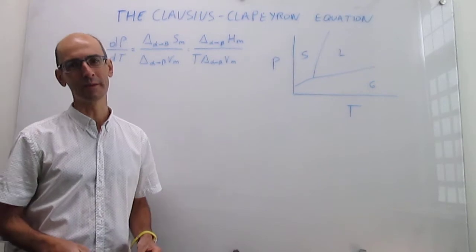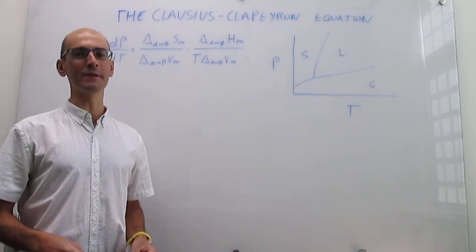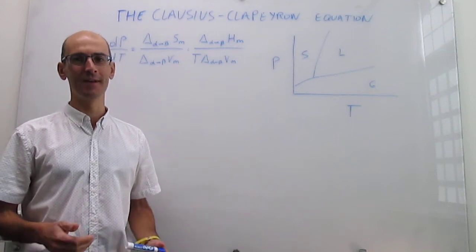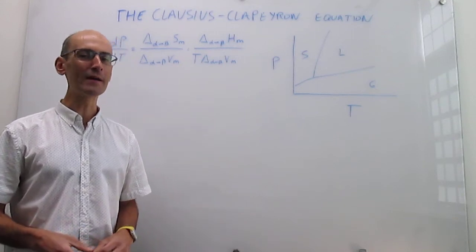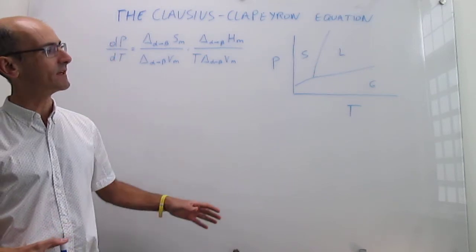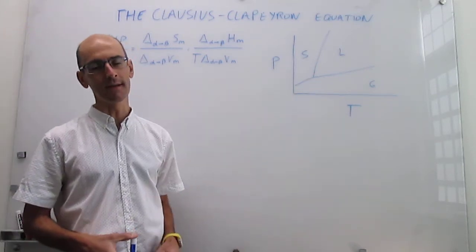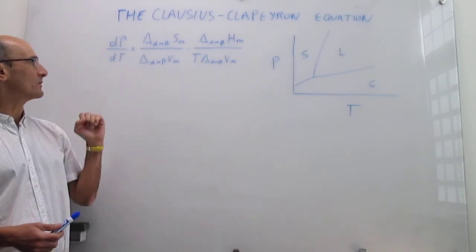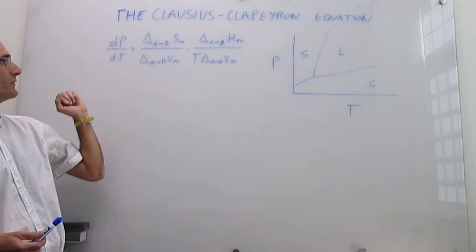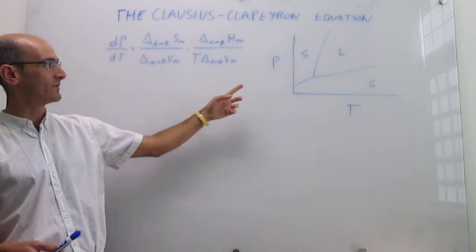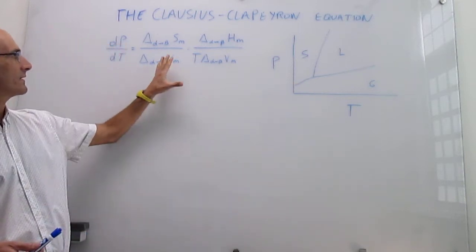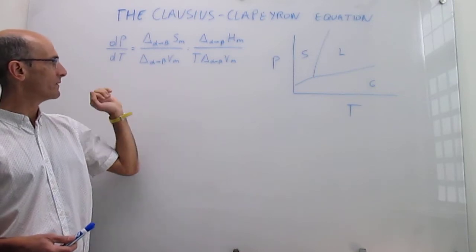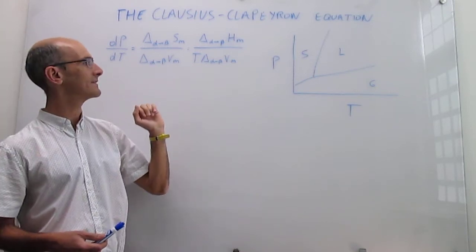In this video we continue with our quantitative description of phase diagrams by introducing the Clausius-Clapeyron equation. In the last video we derived the Clapeyron equation, which predicts the slope of any phase boundary line. That equation is simply the slope of a pressure versus temperature line — the ratio of the change in molar entropy divided by the change in molar volume in the phase transition.